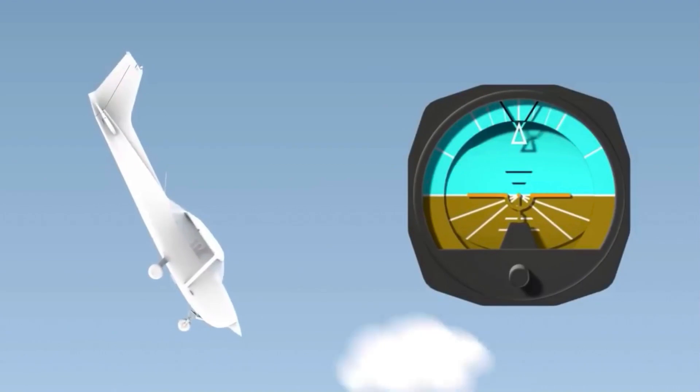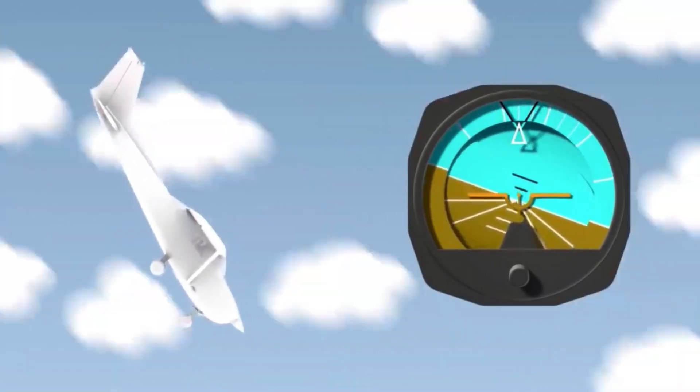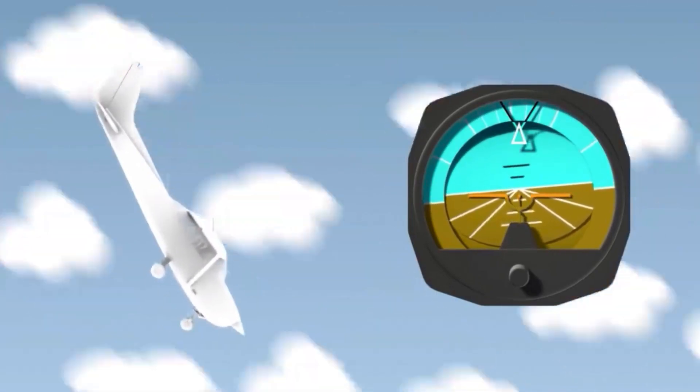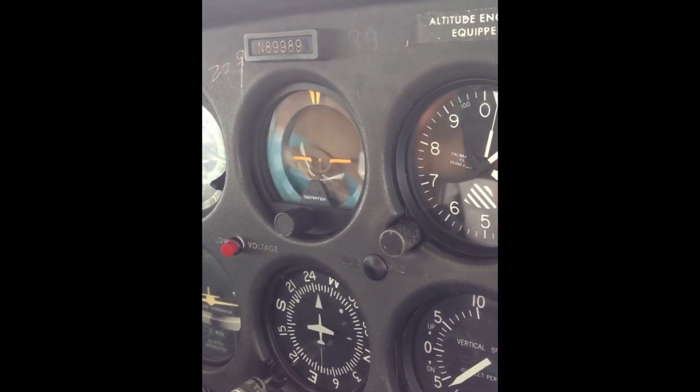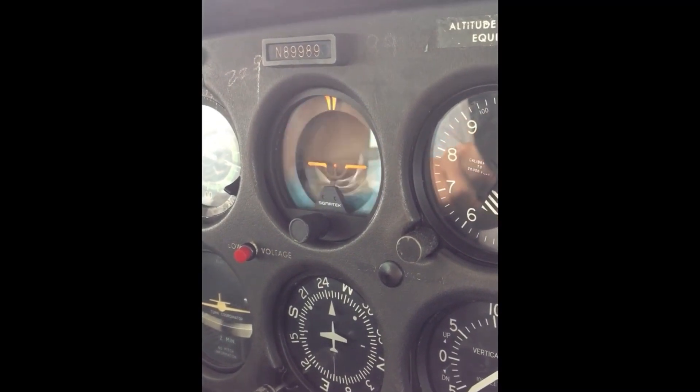The pitch and bank limits depend upon the make and model of the instrument. Limits in the banking plane are usually from 100 to 110 degrees, and the pitch limits are usually from 60 to 70 degrees. If either limit is exceeded, the instrument will tumble or spill, and will give incorrect indications until realigned.